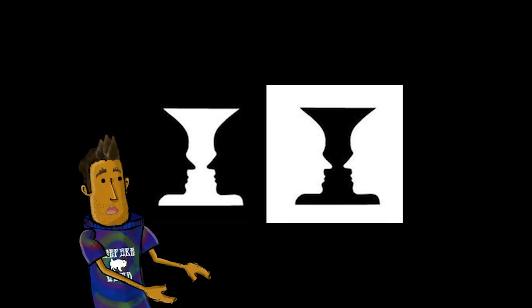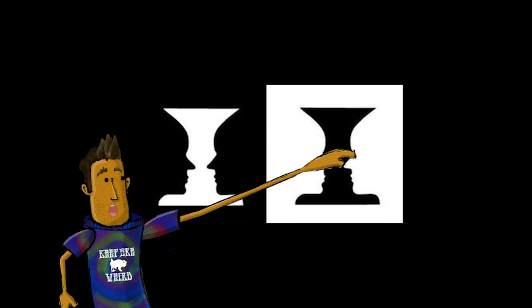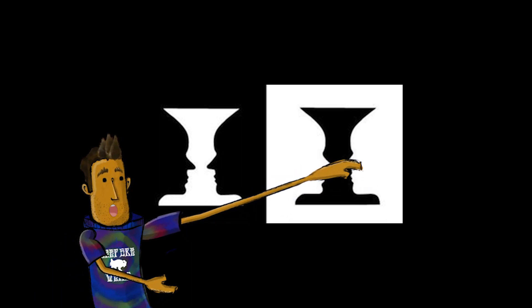When you look at this, sometimes this is called the Rubens vase, and sometimes people look at this and they see a vase, like on the left side. Or, if you look at it differently, you can see two faces staring at each other.